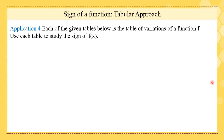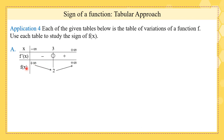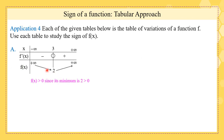Let's take another example. Each of the given tables below is the table of variations of a function f; use each table to study the sign of f(x). In this first table, f(x) is positive because its minimum is 2 and 2 is greater than 0. It varies from +∞ to +2, then from +2 to +∞, so it is always positive. This can also be expressed using a sign table.